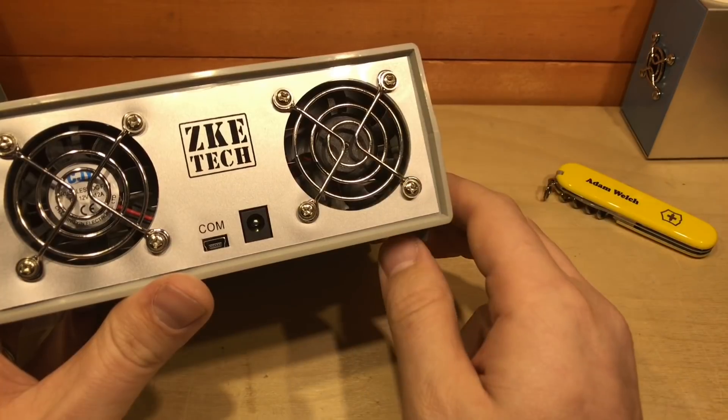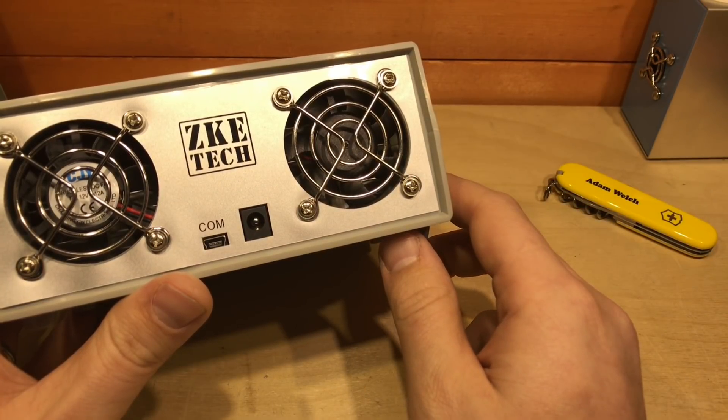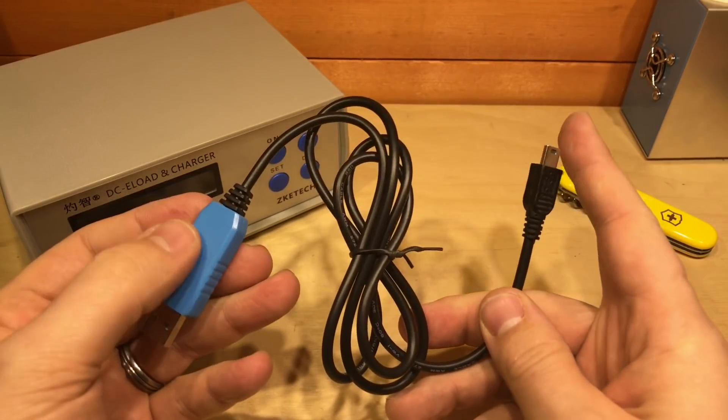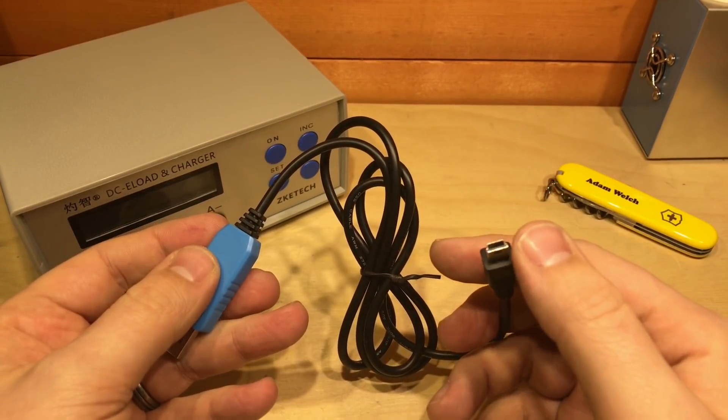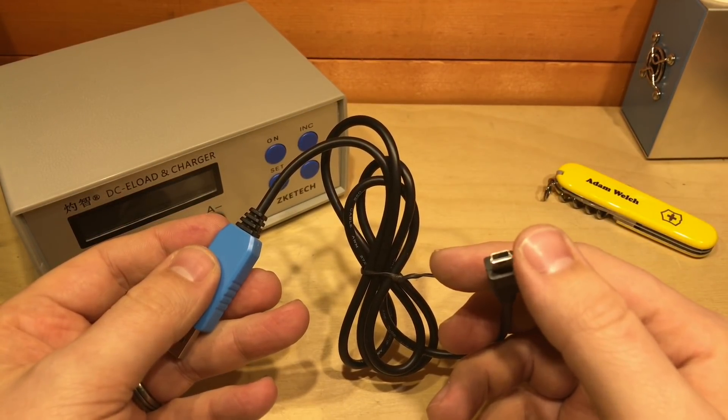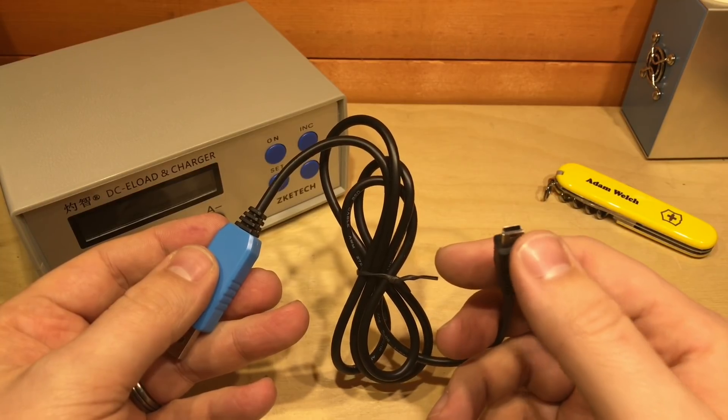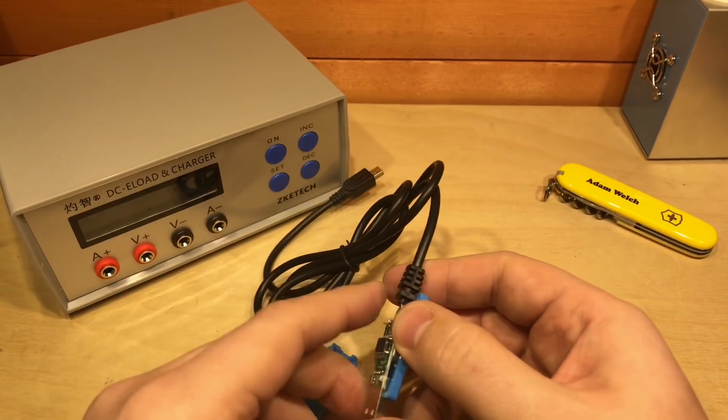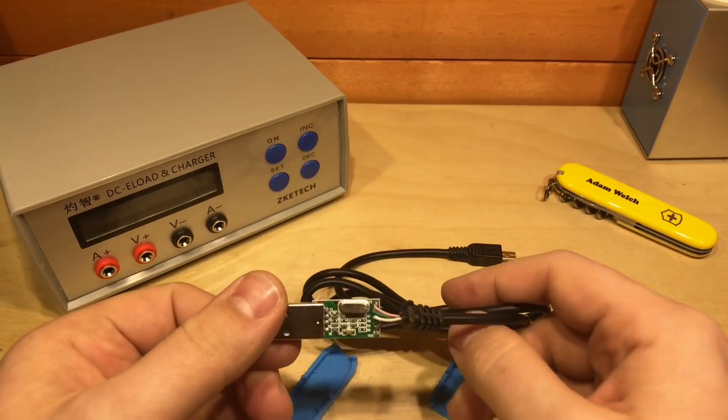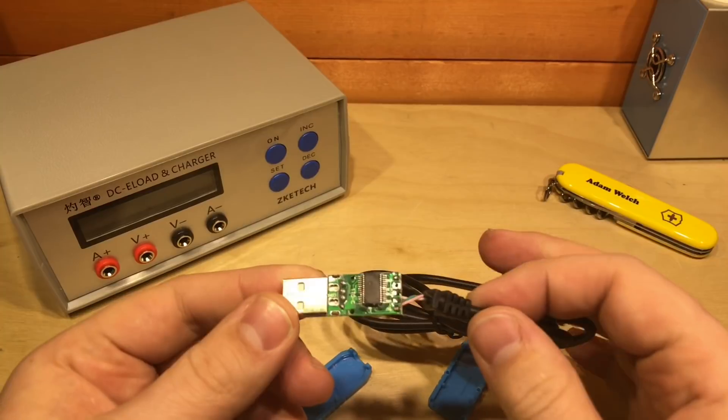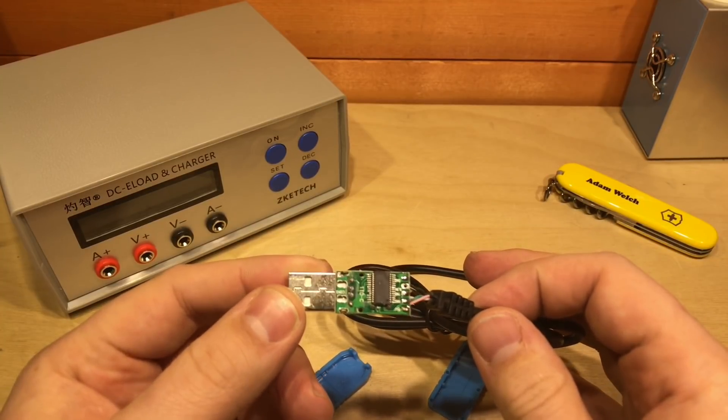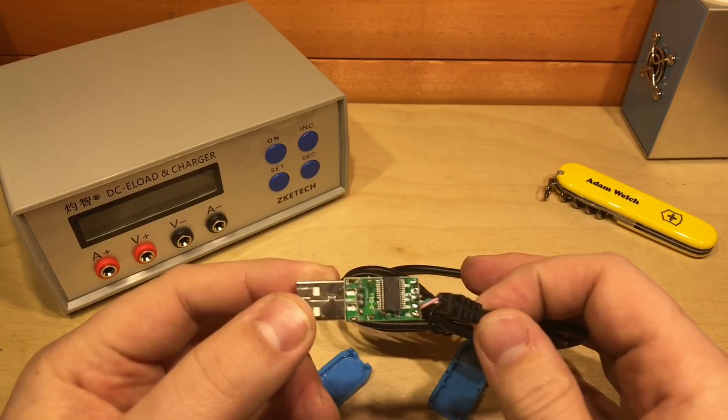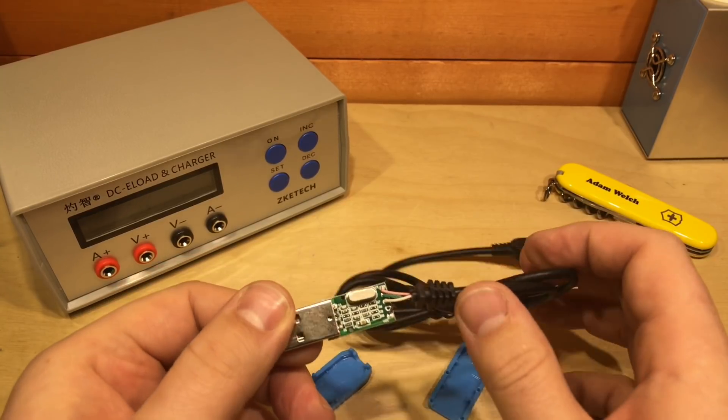But this device actually isn't USB. No, this is a USB to serial adapter, so actually on this mini USB connector here we've got serial TTL, I'm guessing. Now if I open this up, I did wonder whether inside here it would be a CH340, but it's not. It's an unmarked little controller there, no markings on it whatsoever.